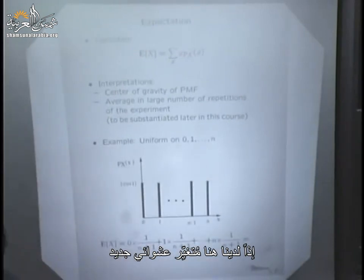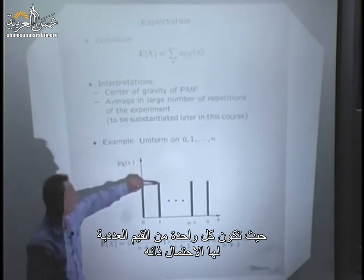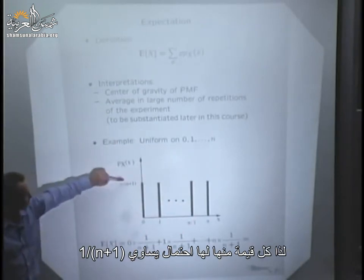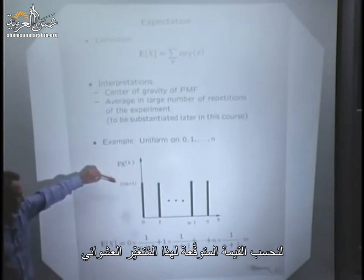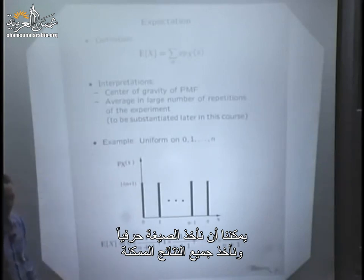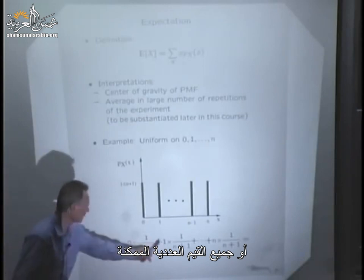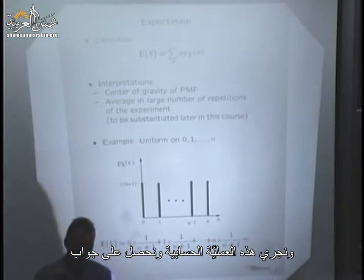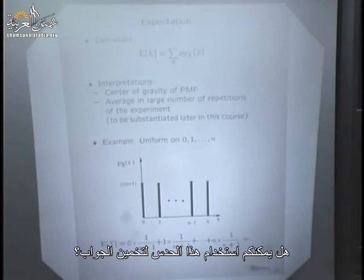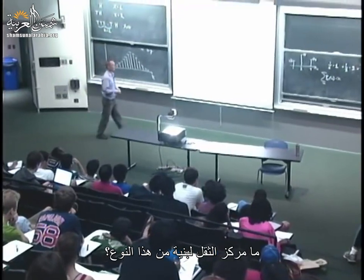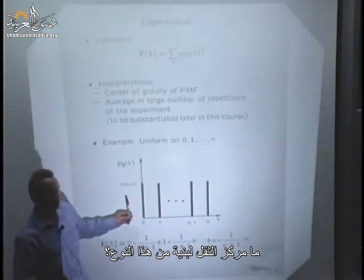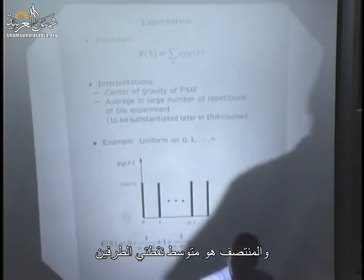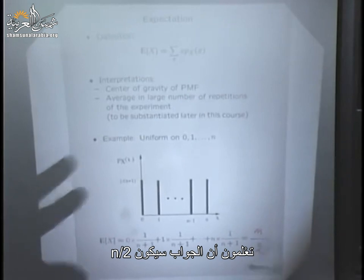Consider a uniform random variable where each of n+1 numerical values is equally likely, each with probability 1/(n+1). What is the expected value? Using the center-of-gravity intuition: we have symmetry, so it should be in the middle — the average of the two endpoints, which is n/2. The moral: whenever you have a PMF that is symmetric around a certain point, that point is the expected value.